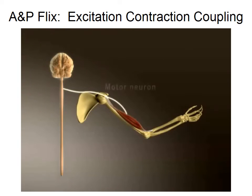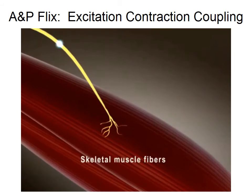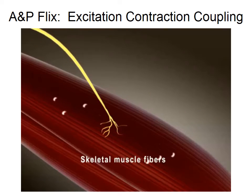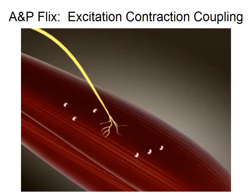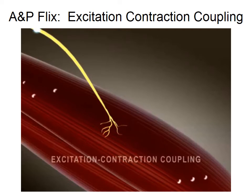A single motor neuron can conduct action potentials to hundreds of skeletal muscle fibers. The sequence of events converting action potentials in a muscle fiber to contraction is called excitation-contraction coupling.